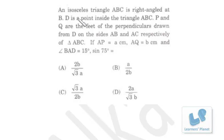Now see this, an isosceles triangle ABC is right-angled at B. D is a point inside the triangle ABC.